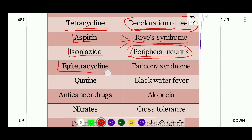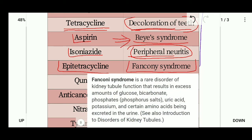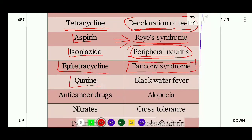The next drug is epi-tetracycline. Its side effect is Fanconi syndrome. Fanconi syndrome is a disorder of the kidney tubules. The kidney tubules get damaged, causing excess amounts of glucose, bicarbonate, phosphate, uric acid, potassium, and amino acids to be excreted in the urine instead of being reabsorbed. This Fanconi syndrome is caused by epi-tetracycline.